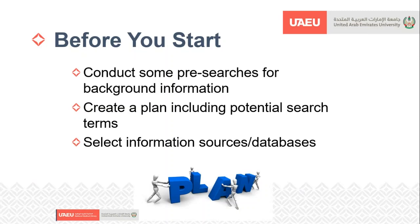Before you start, you need to conduct some pre-searches for background information. Many of you like the Google Scholar approach — by all means, use Google Scholar. We're not saying it's a bad system, but each database and each stage in the research lifecycle requires different types of systems. You do your pre-searches to get background information, create a plan, and then start selecting information sources and databases. The whole key is to plan properly from the very beginning.